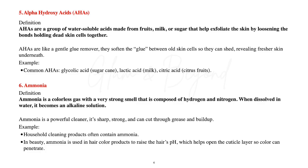Number five, alpha hydroxy acids, also known as AHAs. They are a group of water-soluble acids made from fruits, milk, or sugar that help exfoliate the skin by loosening the bonds holding dead skin cells together. AHAs are like gentle glue removers — they soften the glue between old skin cells so they can shed, revealing fresher skin underneath. Common examples of AHAs include glycolic acid, lactic acid, and citric acid.